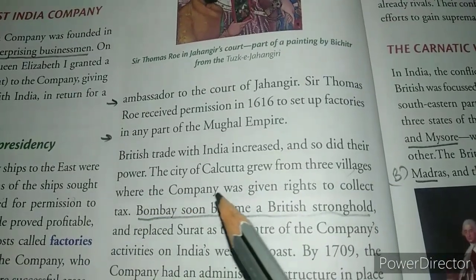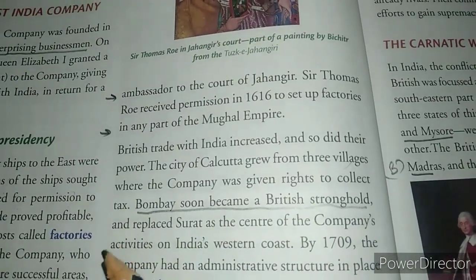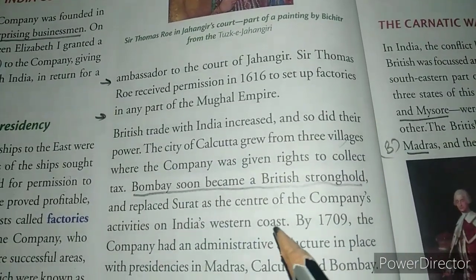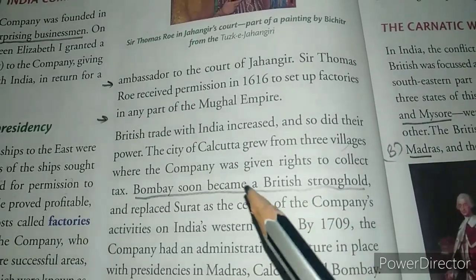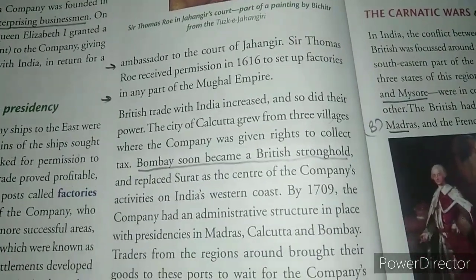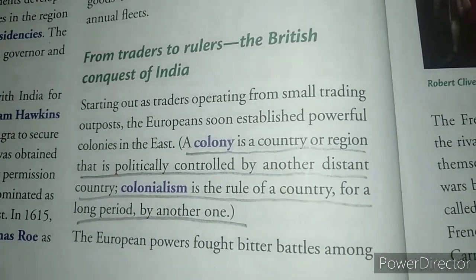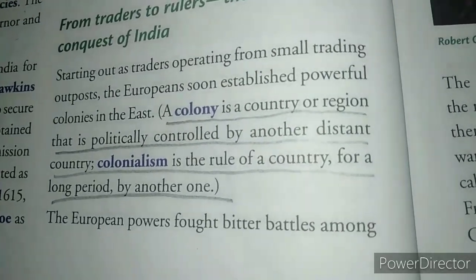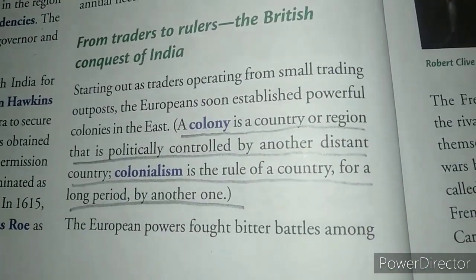British trade with India increased and so did their power. The city of Calcutta grew from three villages where the company was given rights to collect tax. Bombay soon became a British stronghold and replaced Surat as the center of the company's activities on India's western coast. So Surat was leading at first, but when Bombay came into existence, Bombay started leading in terms of the western coast.